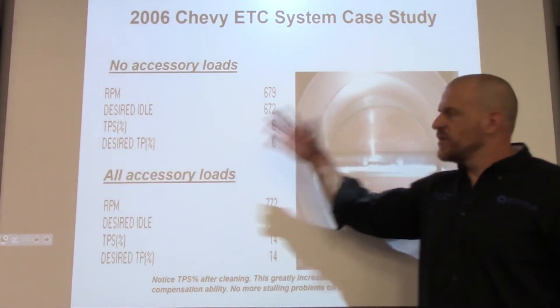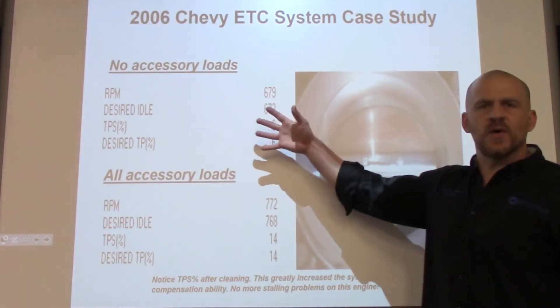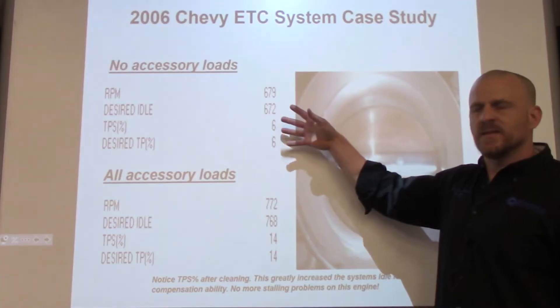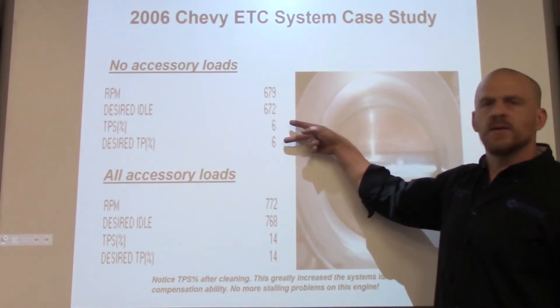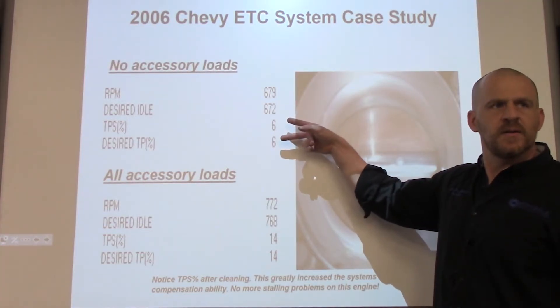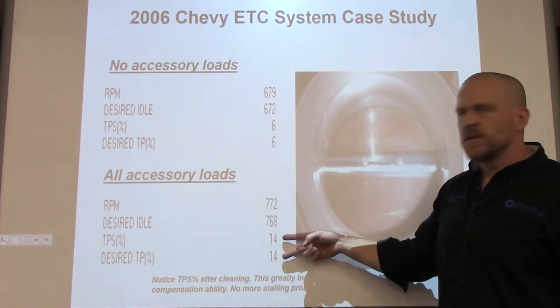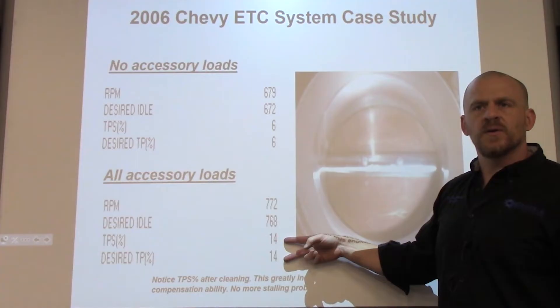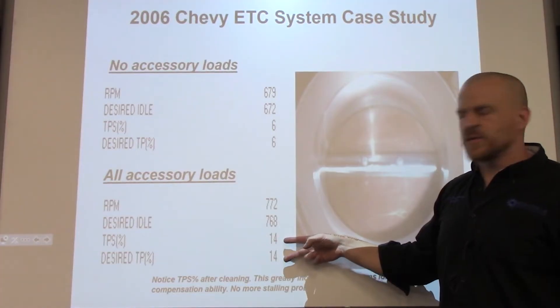After cleaning the throttle body, with no accessory loads, we see 6%. After cleaning with full accessory loads, we see 14%.